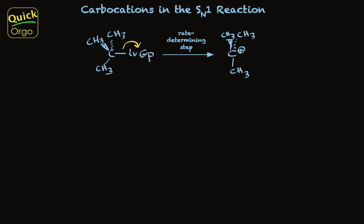Carbocations play a central role in the SN1 reaction. It's the carbocation that is formed in the rate-determining step, and then it's what happens to the carbocation that determines the products ultimately.